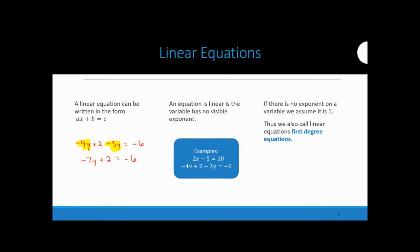An easy way to determine if your equation is linear is to check whether there's a number as an exponent on your variable. If there's no exponent on your variable, it's automatically a linear equation. For example, 2X squared equals 5 is not linear because X is squared, but 2X equals 5 is linear. If we give the variable an exponent, we assume it's 1 — that's why we also call linear equations first-degree equations.